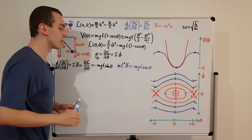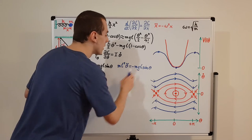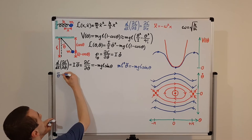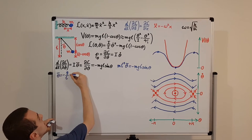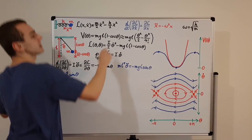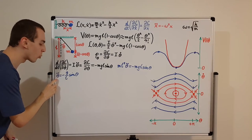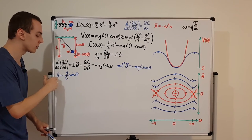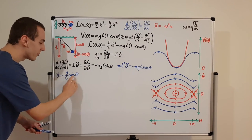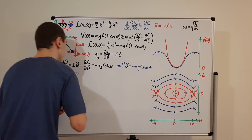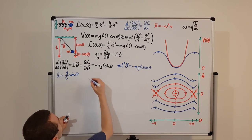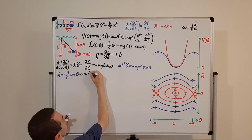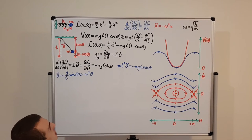There are simplifications we can make. Canceling M and dividing both sides by L squared gives: theta-double-dot equals minus g over L times sine theta. This is the equation of motion, analogous to what we had for the SHO. It is also a second-order differential equation, but it is very nonlinear because of the sine theta term. For very small angles, sine theta is approximately equal to theta, giving the approximation: theta-double-dot is approximately minus omega squared times theta.